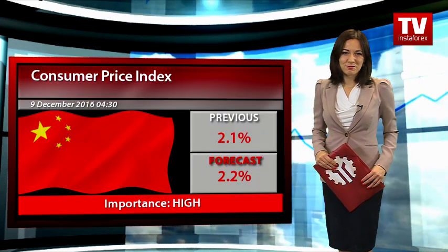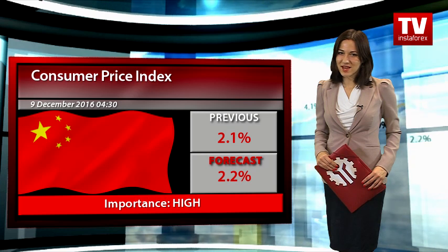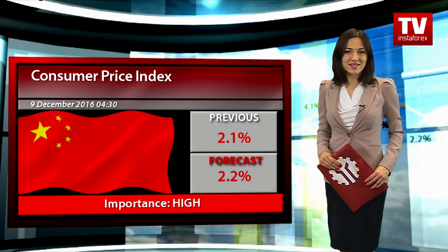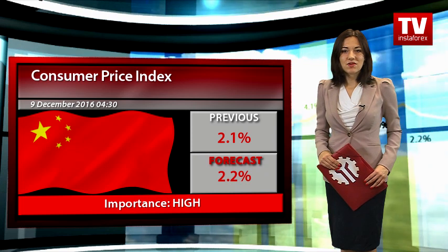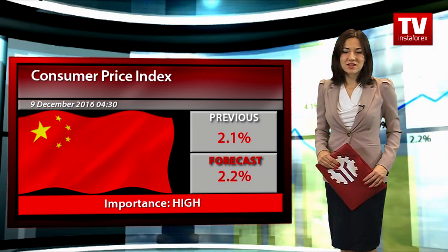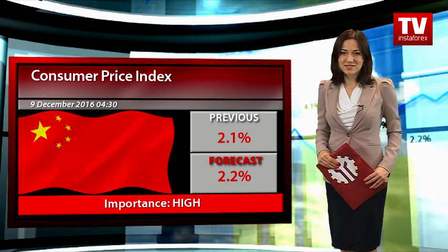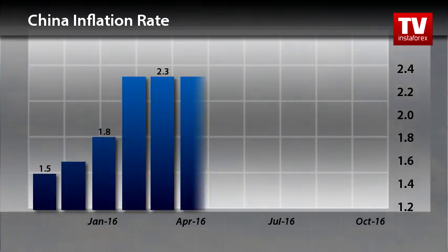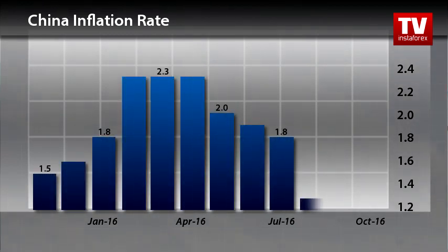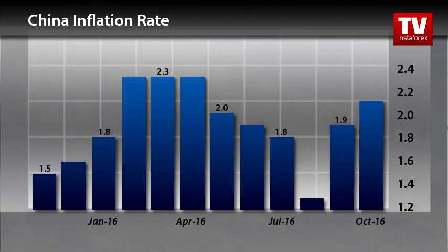Another important report will see the light of day on Friday. China will reveal its consumer price data for November. The CPI is expected to rise by 2.2% on a yearly basis. In October, the annual inflation rate accelerated to 2.1% from 1.9% in September.